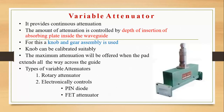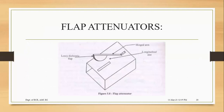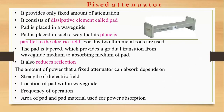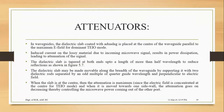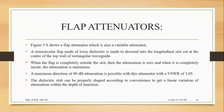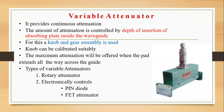Any confusion? You have three attenuators: one is the normal horizontal fixed attenuator, one more is the flap attenuator, and one more is the variable attenuator. Any confusions?